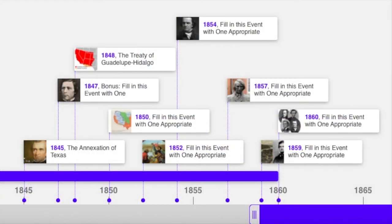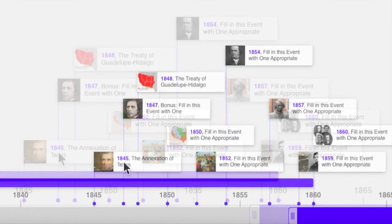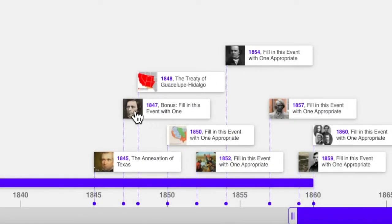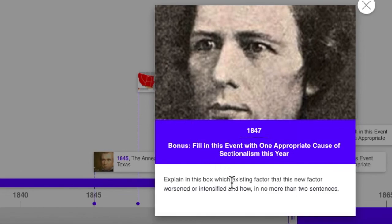Now we take a closer look at the rest of the timeline from 1840 to 1860 — this is where you fill in most of the information you have to supply for the assignment. Let's look at those that are supplied for you. In 1845, you have the annexation of Texas. Consider how this promoted sectionalism — add an instance to the timeline to explain how and show when. Then for 1847, explain on the template which existing factor this new factor worsened or intensified, in no more than two sentences.